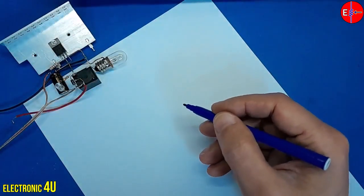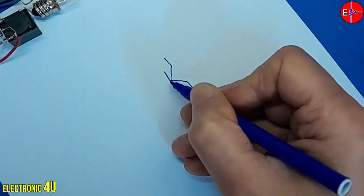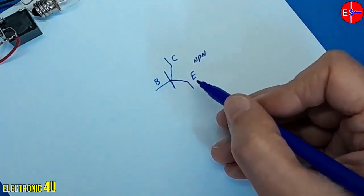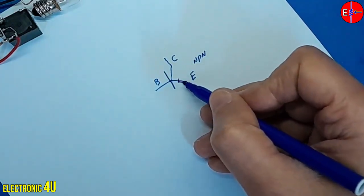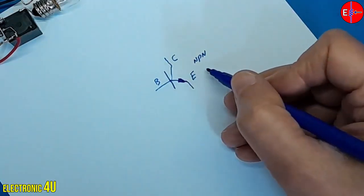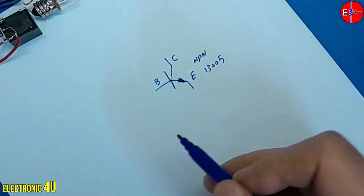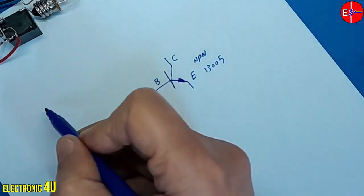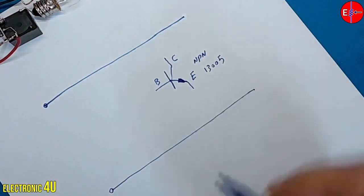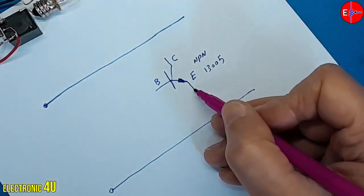To start, we need an NPN transistor to act as a switch. In NPN transistors, there is an arrow pointing outwards on the emitter terminal. The transistor used is labeled 13005. For easier schematic drawing, I will draw a positive line and negative line at the top and bottom. In NPN transistors, the emitter terminal is connected to zero volt or ground.